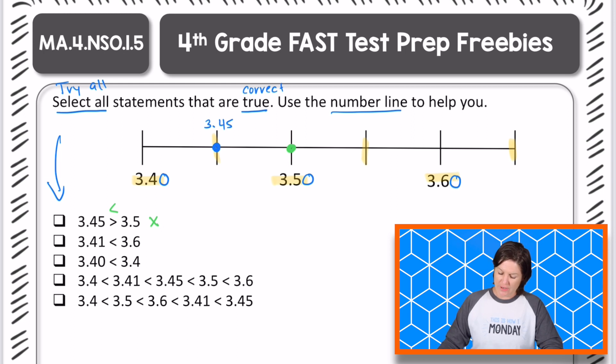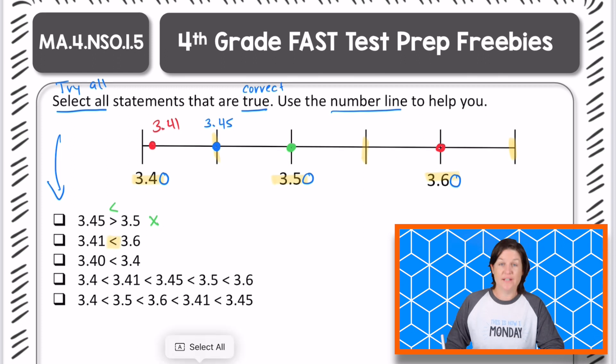Let's go to the next one. We've got 3.41 hundredths. Well, 3.40 hundredths is at the beginning. Then 3.41 hundredths would be right about here. And then 3.6 tenths is over here. Is 3.41 hundredths less than 3.6 tenths? It sure is. It is closer to the left side, which means that it is less. So we can go ahead and mark that answer choice right there.